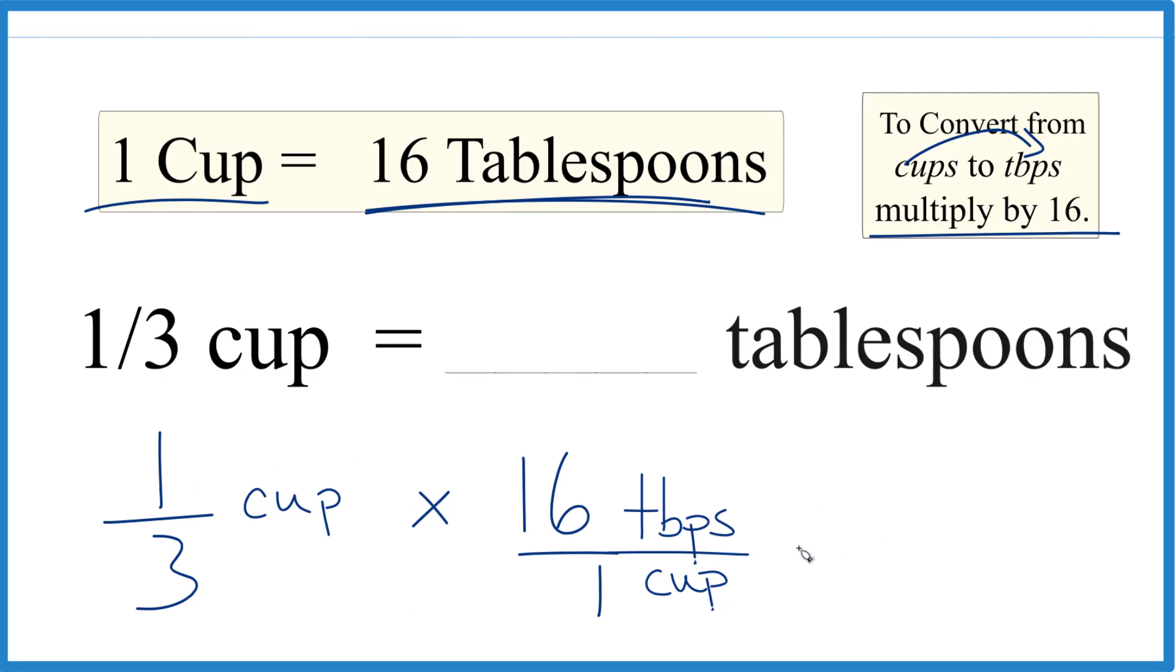One times 16, that equals 16, and three times one, that equals three. And at this point, you really can't simplify this any further.